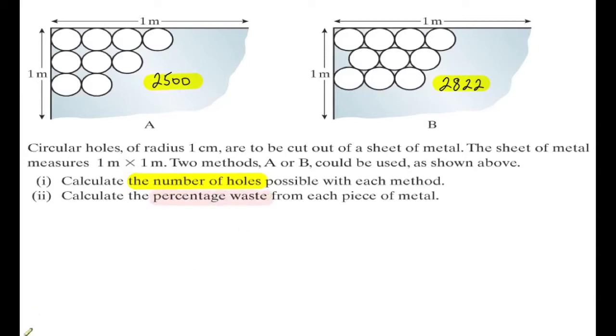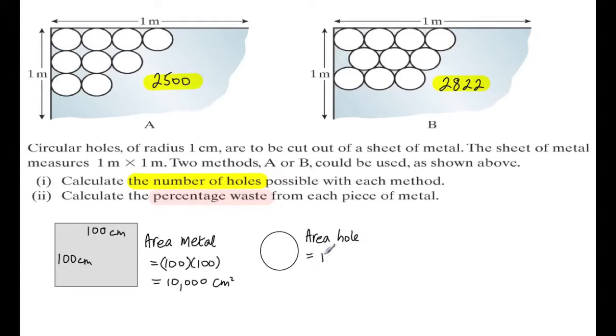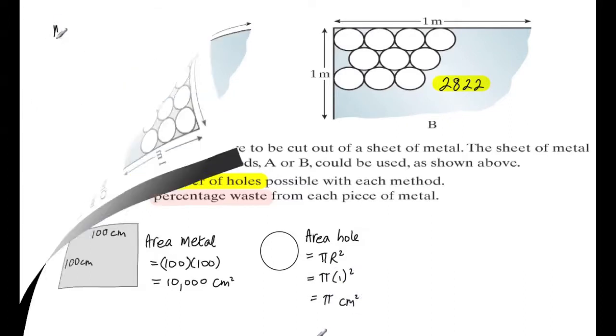Second question, the percentage waste from each piece of metal. Well let's first consider the area of a sheet of metal. We will use centimeters and centimeters squared. So we have 100 centimeters by 100 centimeters, so the area is length by breadth which is 100 centimeters multiplied by 100 centimeters, giving us 10,000 centimeters squared. Now the next thing to consider is what is the area of one of the holes. Well the area of a circle or disk is pi r squared. In this case r is equal to one, so it's pi times one squared, but one squared is one, so the answer is just pi centimeters squared, a number a little bigger than three.